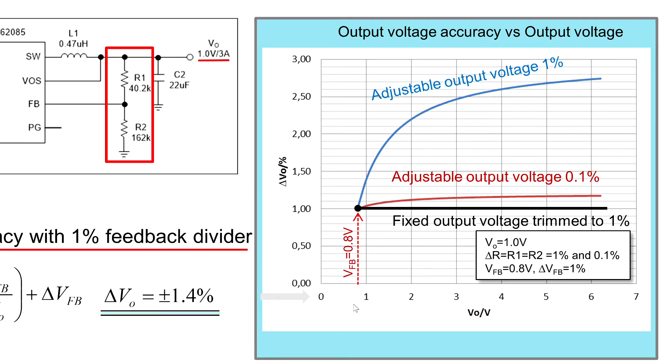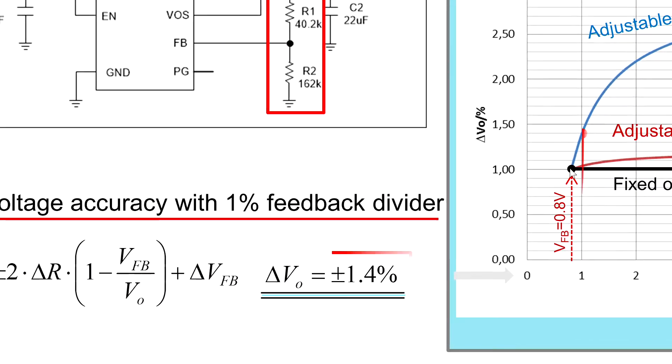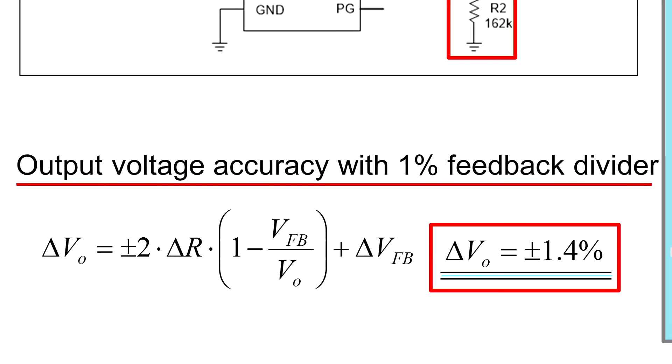So what we see here on the graph on the right is the output voltage we program and the output voltage accuracy. So with a resistor divider of 1% we can see the closer we program the output to the feedback regulation voltage the better the accuracy will be. So for a 1V output the overall output voltage accuracy is 1.4%. And we put in the resistor divider accuracy as well as the feedback regulation accuracy in percent.